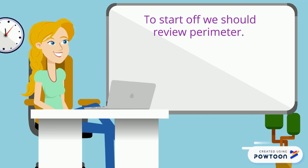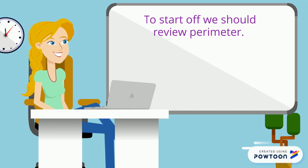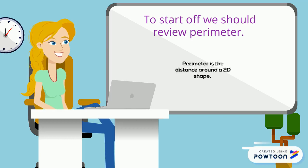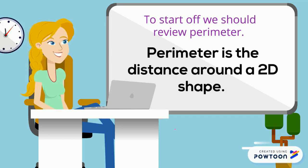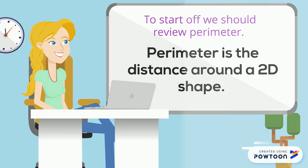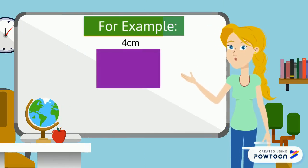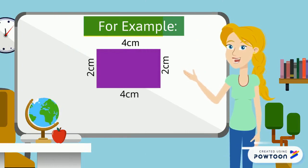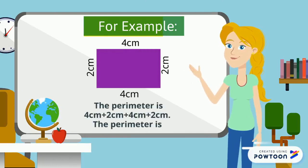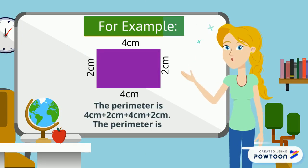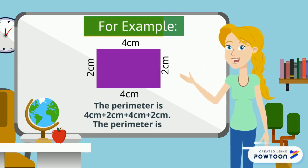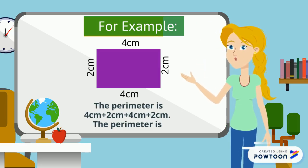To start off we should review perimeter. Perimeter is the distance around a 2D shape. For example, if you were to find the perimeter of this rectangle, you would need to add up all the sides — so you would add 4 centimeters plus 2 centimeters plus 4 centimeters plus 2 centimeters to find the perimeter. Can you add those numbers up? If you said 12 centimeters, you are correct!